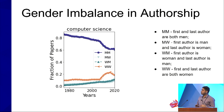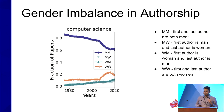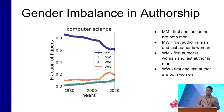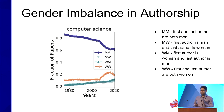To understand citation imbalance, we first need to understand the authorship imbalance. We have constructed four gender categories — MM, MW, WM, WW — based on the gender of the first and last author. MM refers to first and last author both being men; MW refers to first author being a man and last author a woman; WM is the reverse; and WW refers to first and last author both being women. Looking at computer science, we found that men are participating more than women, but over the years there is an increasing participation of women, though a wide gap still exists.